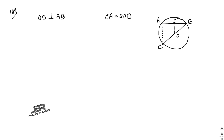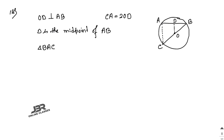Since OD is perpendicular to AB, D is the midpoint of AB. Also, O is the midpoint of BC because O is the center. From triangle BAC, OD is parallel to CA, and OD equals half of CA.